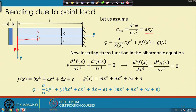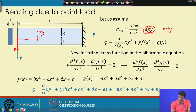We know from the flexure formula that σxx = My/I, where M varies linearly. This motivates taking σxx = a·xy with an unknown constant a. Integrating ∂²φ/∂y² = a·xy with respect to y gives the stress function form.